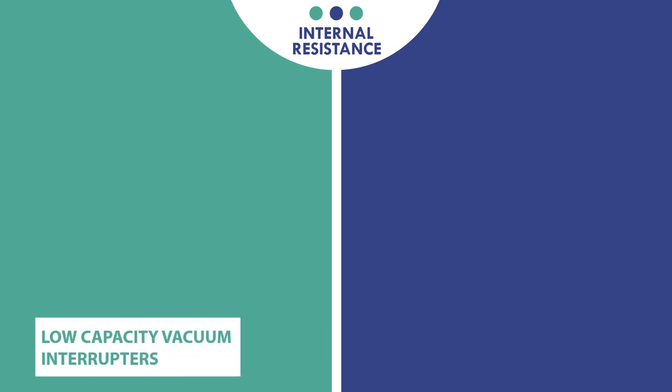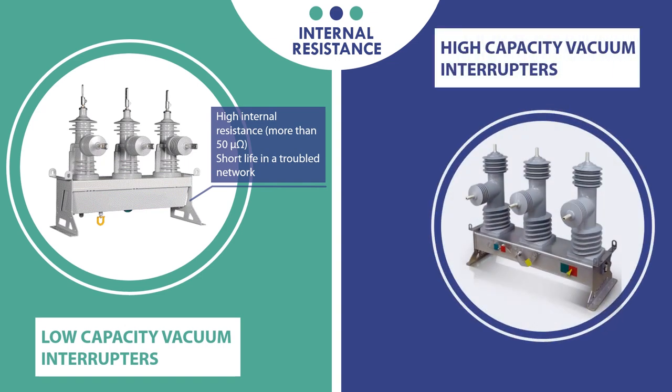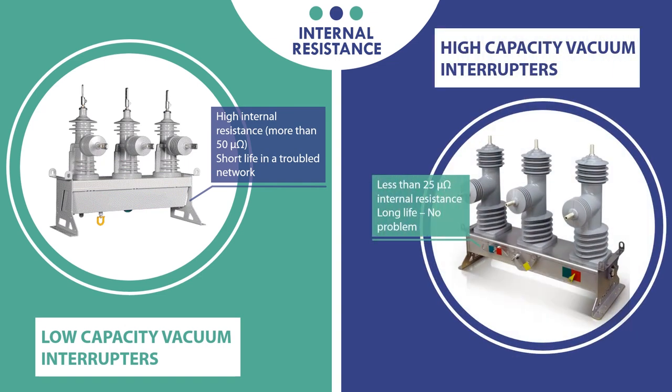Moving to the fourth important factor when choosing a right recloser: internal resistance. Here we have low capacity vacuum interrupters, which are generally characterized with high internal resistance more than 50 micro ohm and low short circuit capacity. It also has a short life in a troubled network, which makes life cycle cost quite high. Another type is high capacity vacuum interrupters. Their strong point is that it has less than 25 micro ohm internal resistance and can take high level of short circuit current. It has a long operating life, which gives it a low life cycle cost.